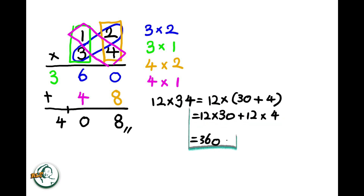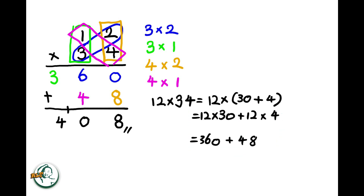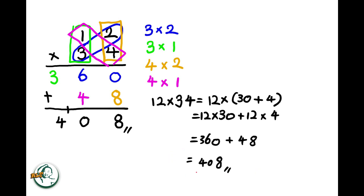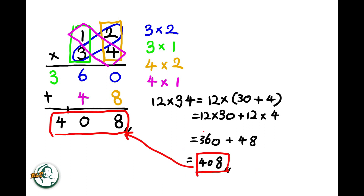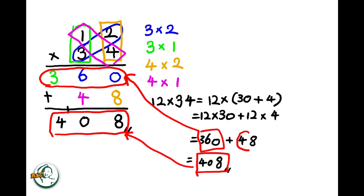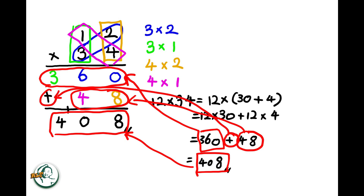Calculating, we get 360 for 12 times 30 and 48 for 12 times 4. Adding these results together, 360 plus 48 equals 408. So this 408 equals to this part. This 360 equals to here, and 48 is here. And this explains why we need to add these two numbers here in the column method.